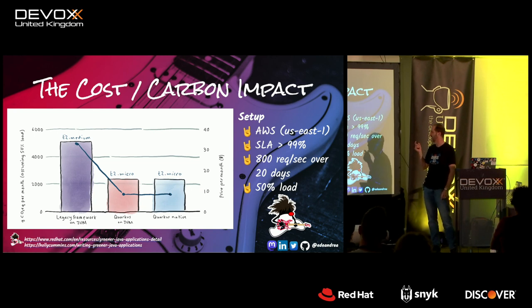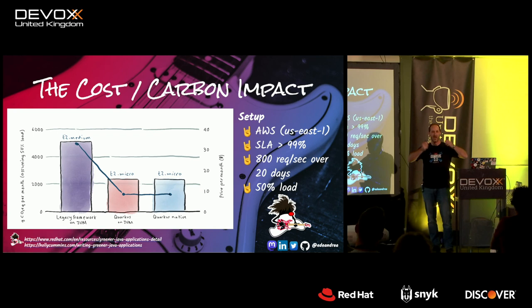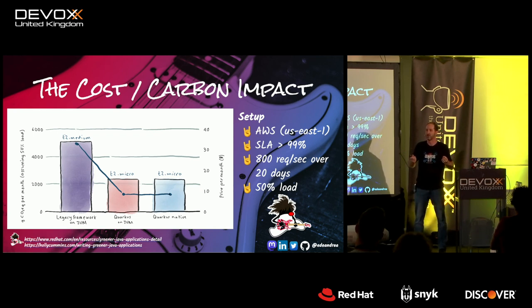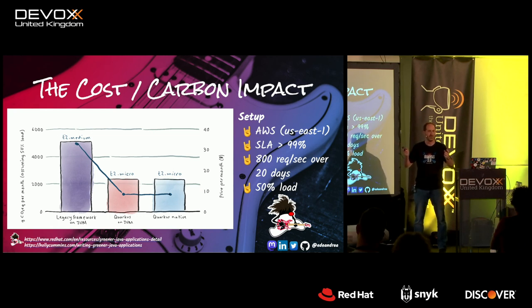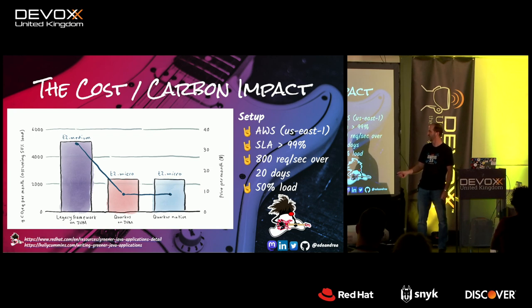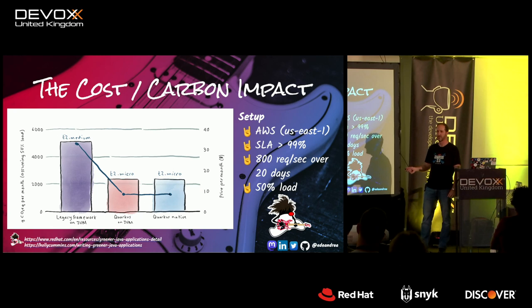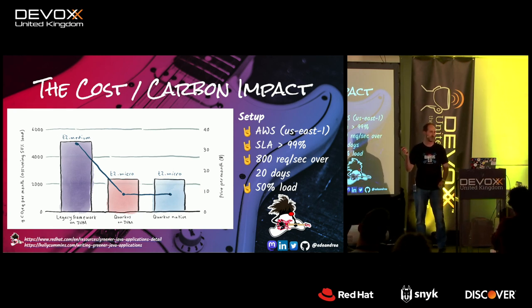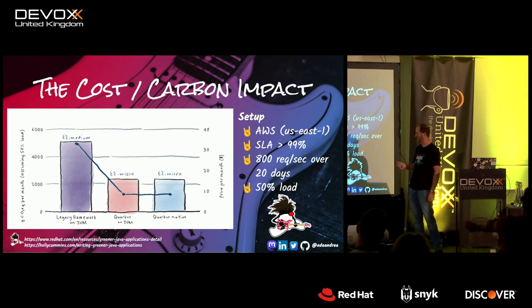The max throughput density benchmark — measuring memory per request at max throughput — shows you could fit twice as many Quarkus JVM apps as Spring native apps, and Quarkus JVM was giving twice as much throughput as Spring native. Red Hat also did a carbon impact study: funneling 800 requests per second continuously for 20 days, you could get the same throughput in Quarkus on a t2.micro that required a t2.medium for Spring, and it produced three times less carbon.